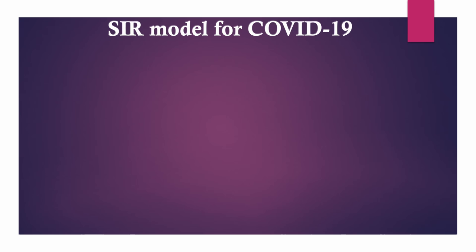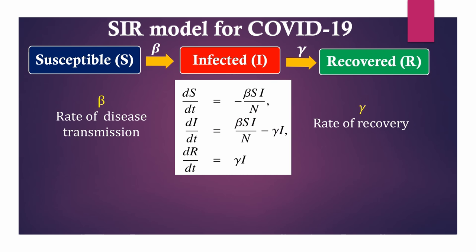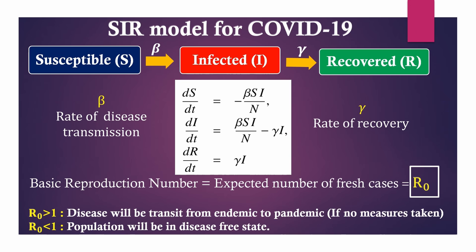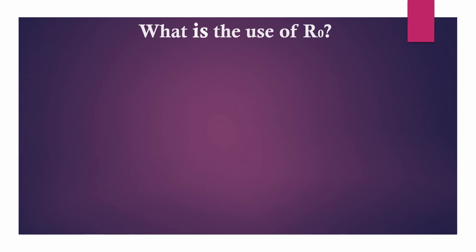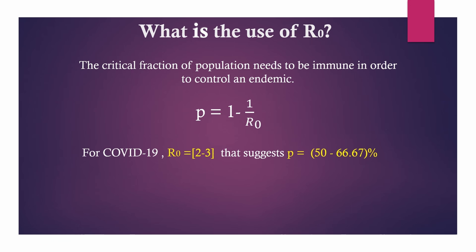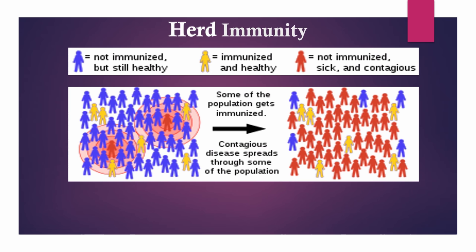We are using R0 from a previously fitted SIR model. When a critical fraction of the population is immunized against an infectious disease, the disease outbreak can be controlled. This eliminates the possibility of a disease epidemic, which is known as herd immunity, showing how disease can be eradicated from the population.